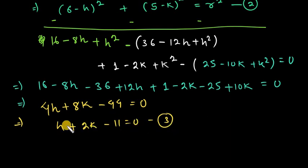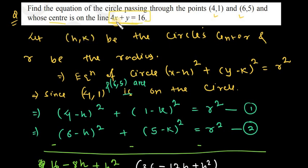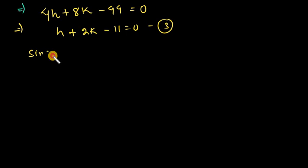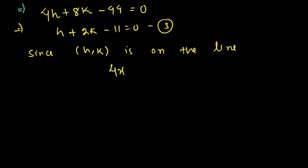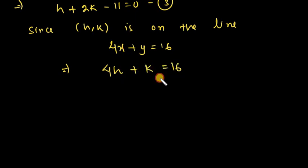We now have a linear equation in h and k. We need one more equation. Since the center (h,k) is on the line 4x + y = 16, the center satisfies this line equation. So we can write 4h + k = 16. This is Equation 4.